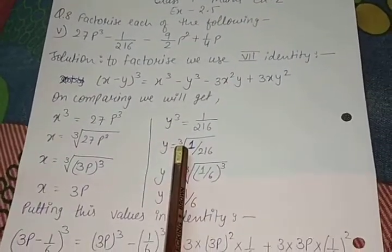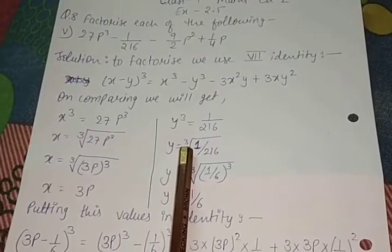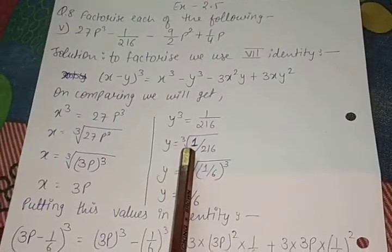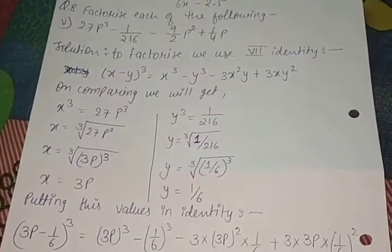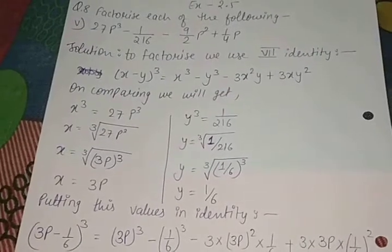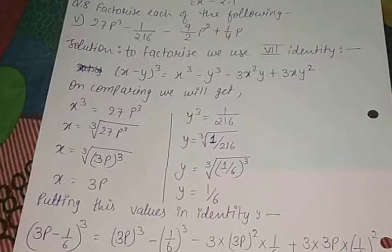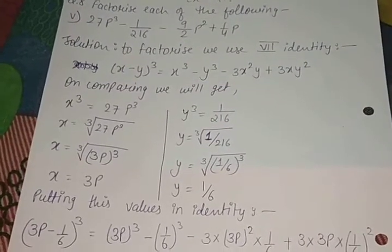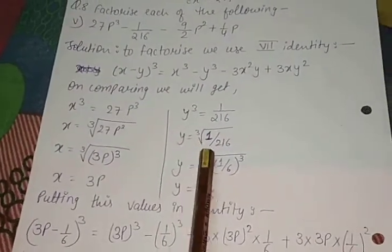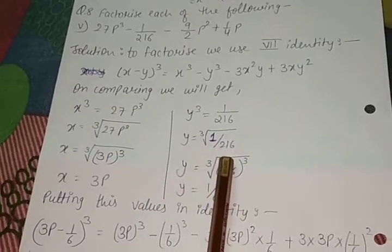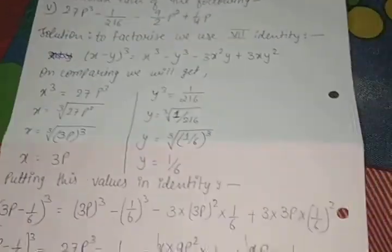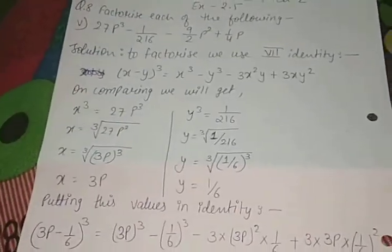Again we transpose this cube to the right hand side. The power will be converted into the cube root. Now we have to remove the cube root. So 1 is always out of the root. The cube root of 1 is always 1. But we have to remove the cube root of 216. So let me tell you the prime factorization.